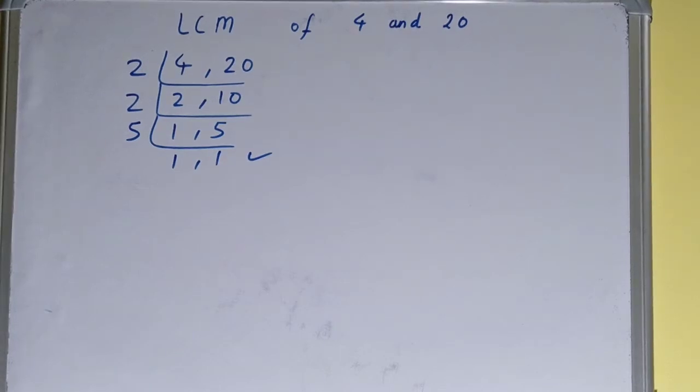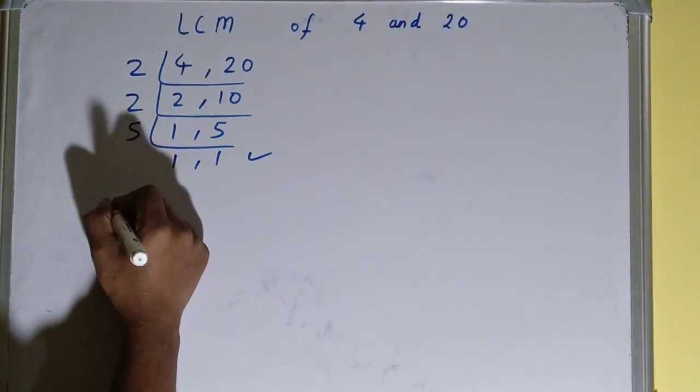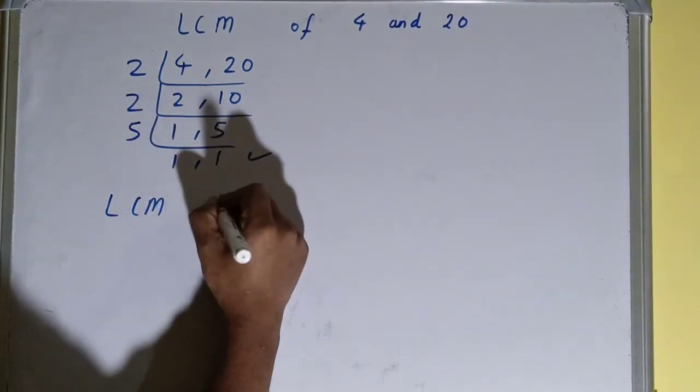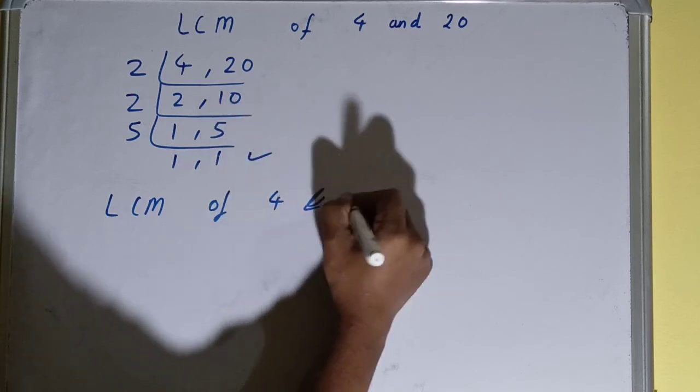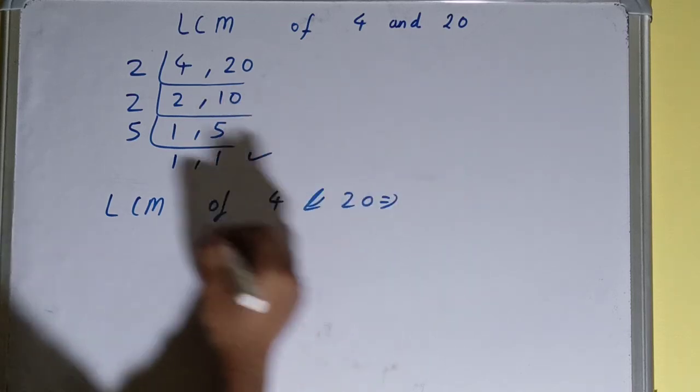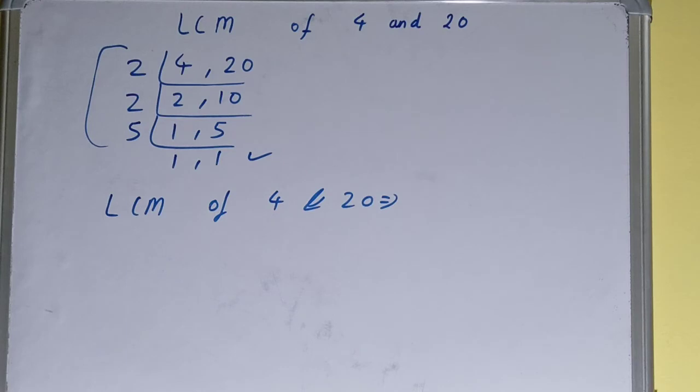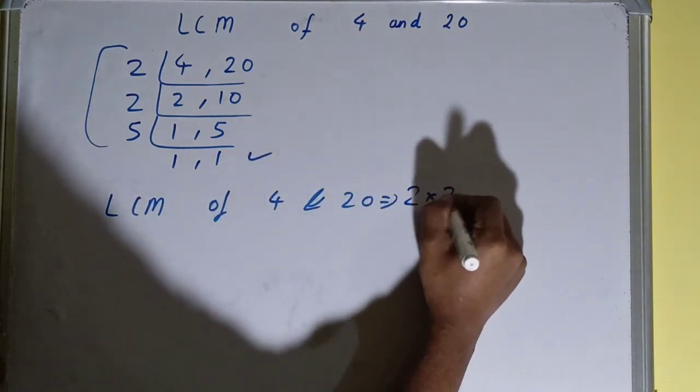Once we get 1 comma 1, we need to stop and do one last thing: that is, LCM of 4 and 20 equals multiply whatever you have on the left-hand side, that is 2 cross 2 cross 5.